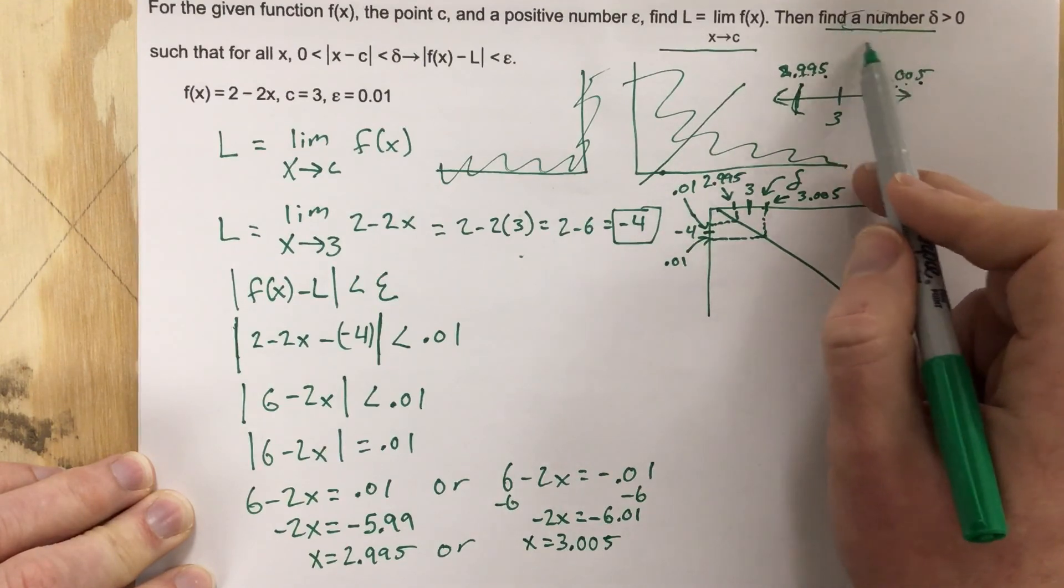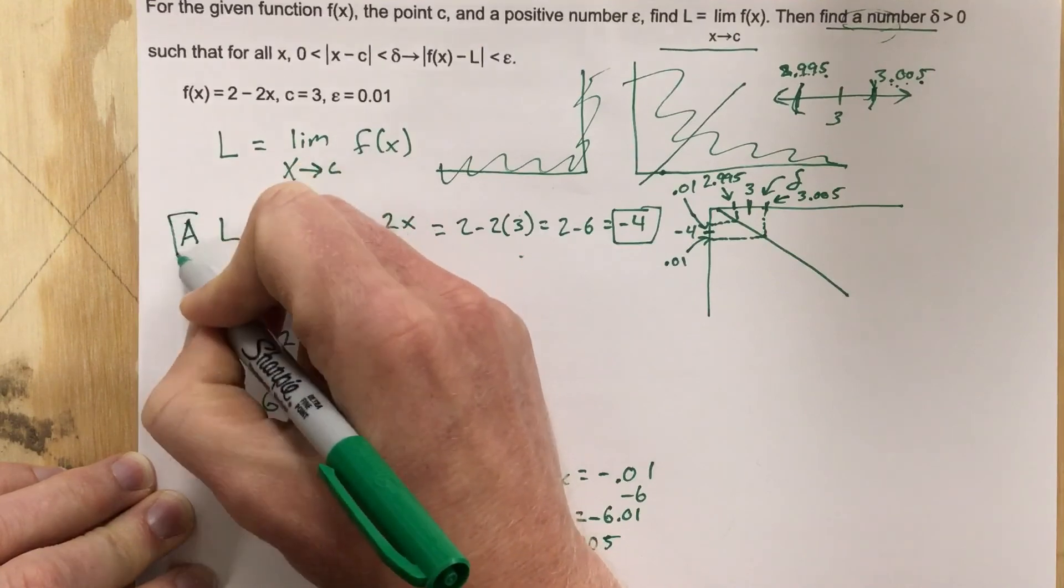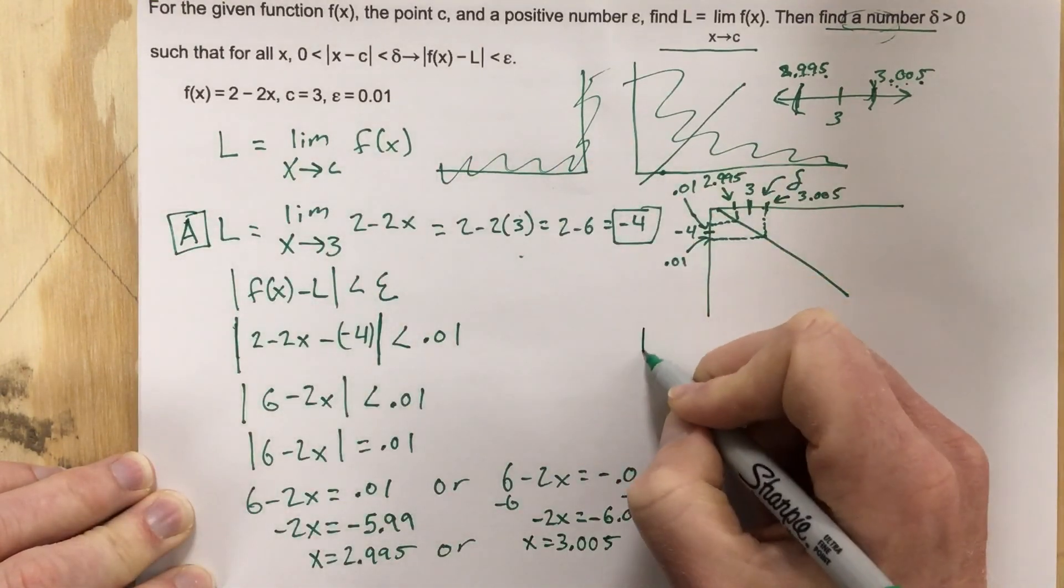What they ask us for, though, is delta. All right, so don't forget this was part A. For part B now, we need to figure out what's delta.